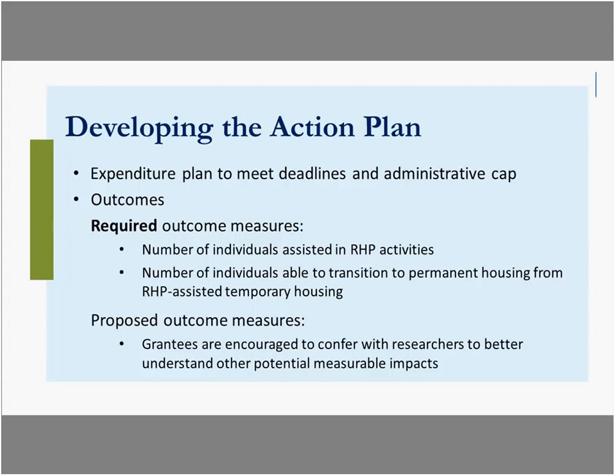The statute and the Recovery Housing Program notice dictate two mandatory outcome measures: the number of individuals assisted and the number of individuals transitioning to permanent housing. Note that recovery housing is a time-limited program — no individual resident can stay longer than two years. There are other program outcome measures you may choose to associate, such as those similar to the homeless programs and Continuum of Care in terms of income and other progress measures for participating individuals, but the two listed are mandatory.